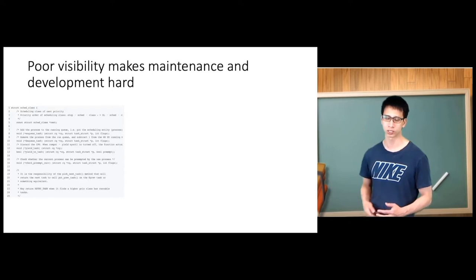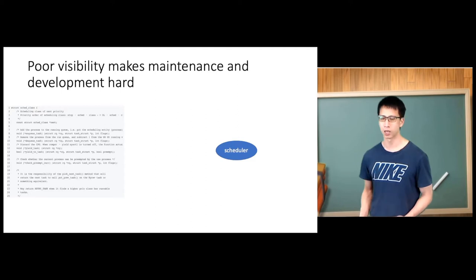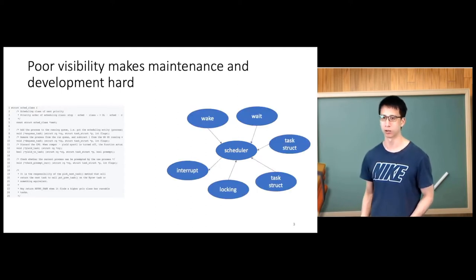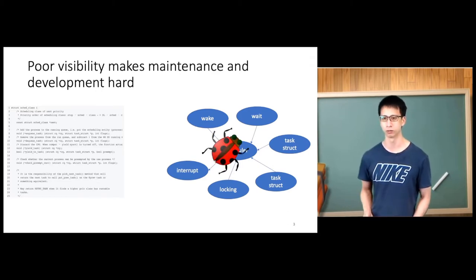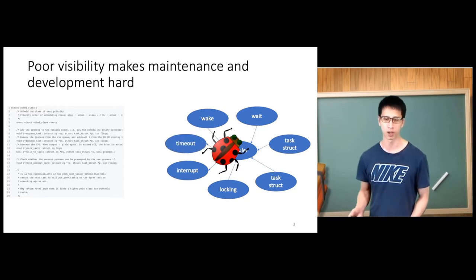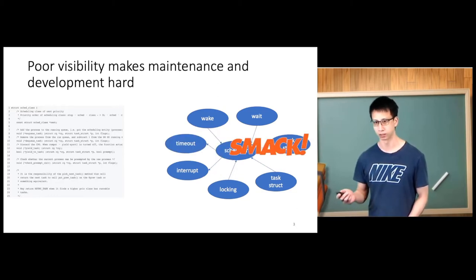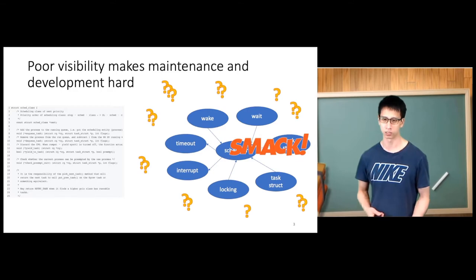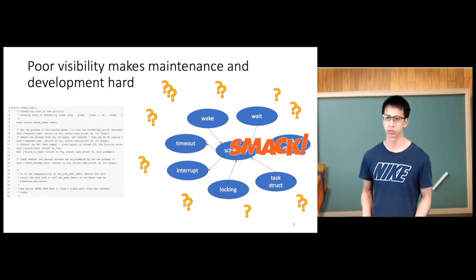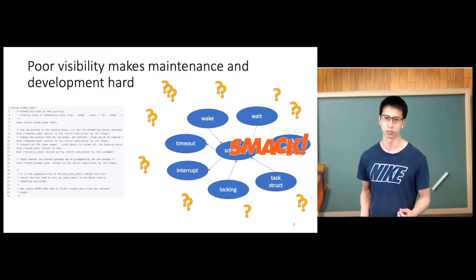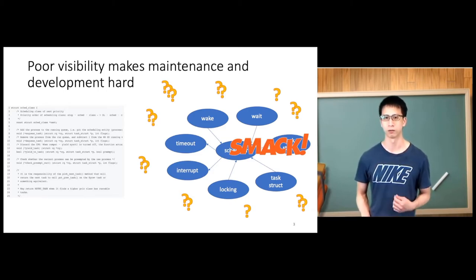For example, if we want to change the schedule algorithm of the kernel, we would read the source code and find the scheduler. We see all the kernel components, but it's easy to miss just one component, which leads to a bug. We fix it, but we don't know if there are more bugs outside. This poor visibility makes maintenance and development so hard, and it's very easy for developers to make a single mistake that causes other systems to crash.